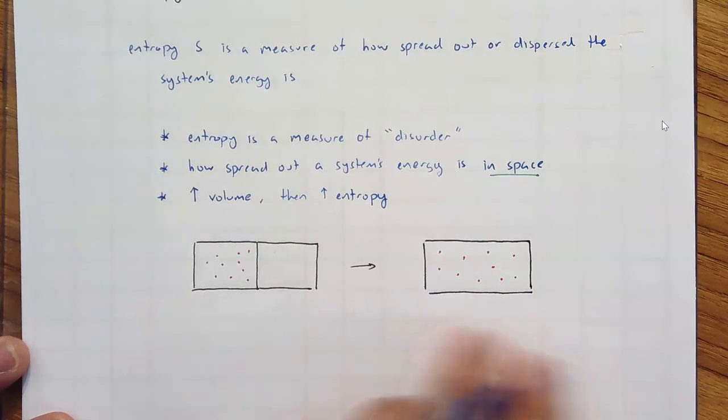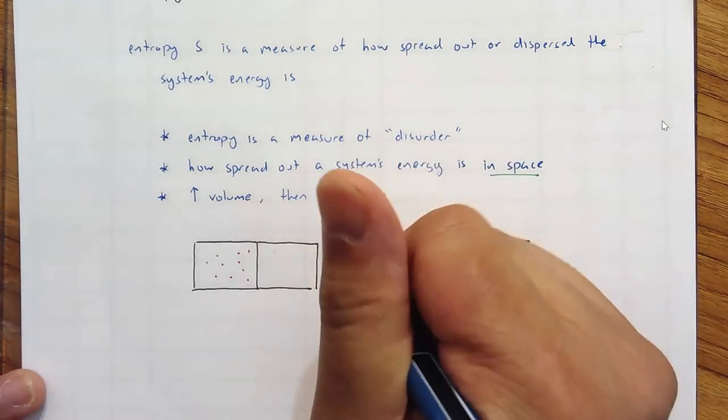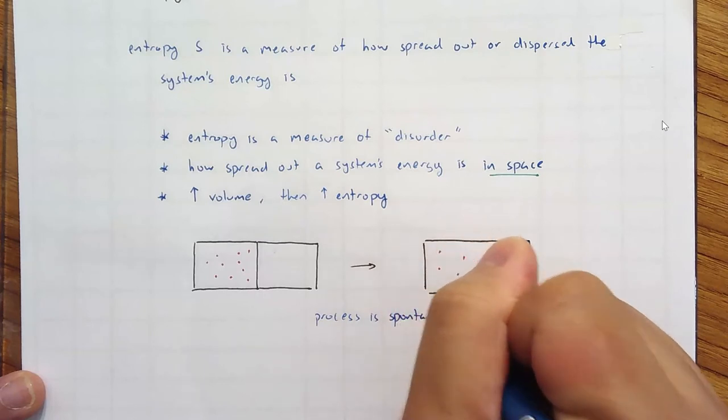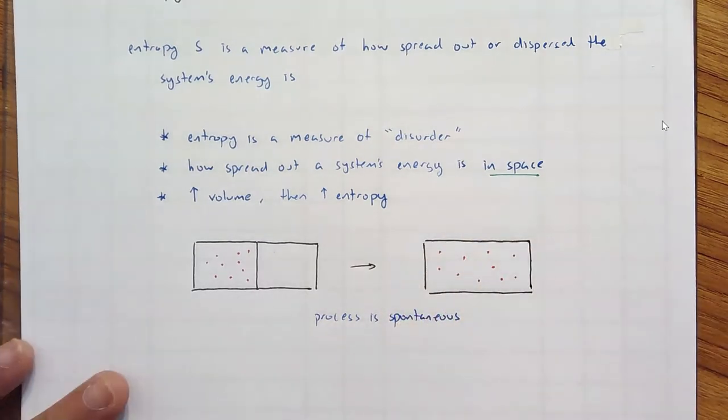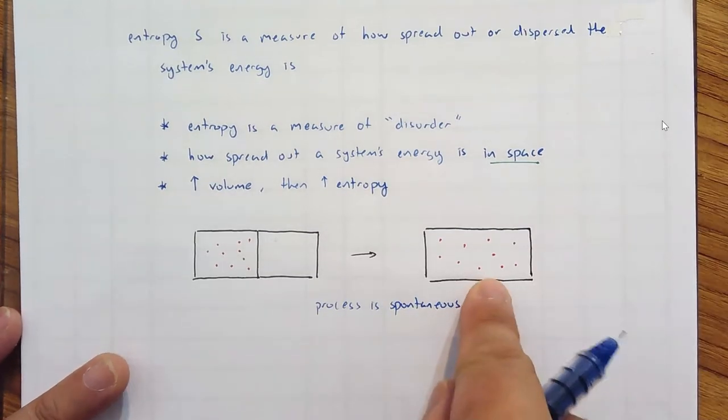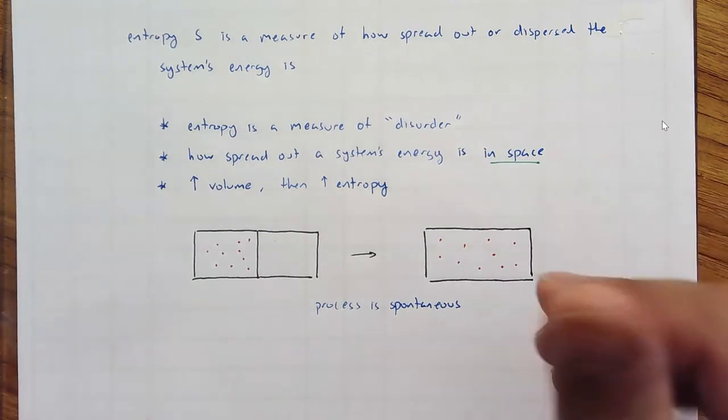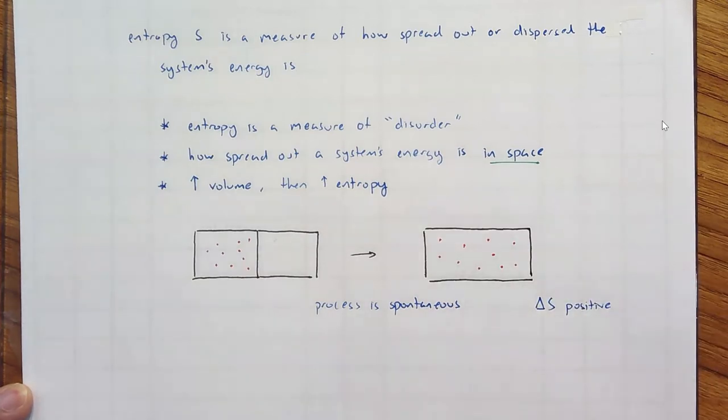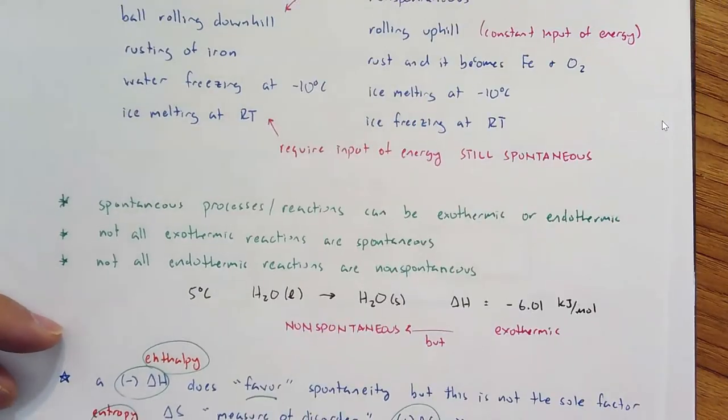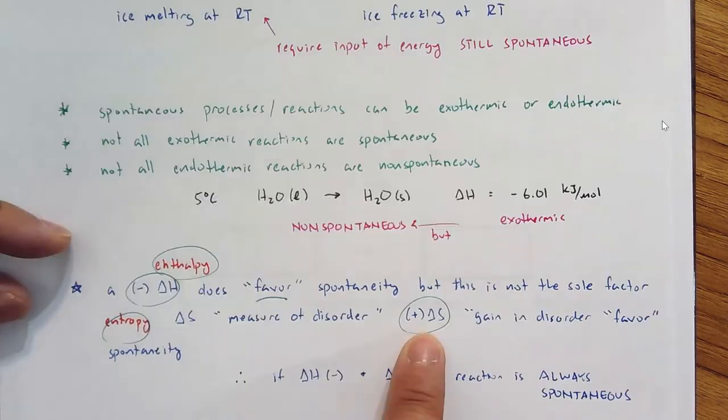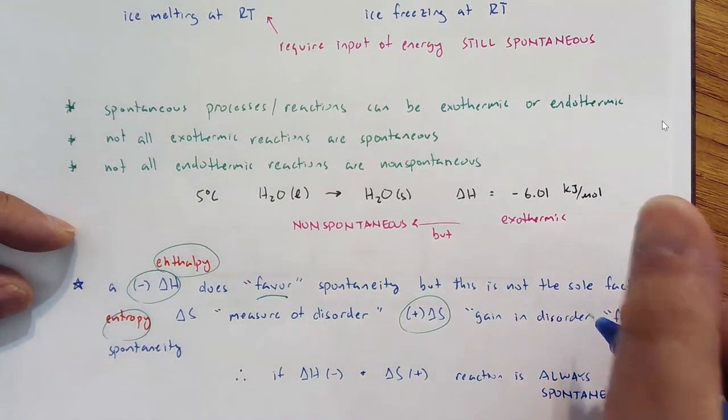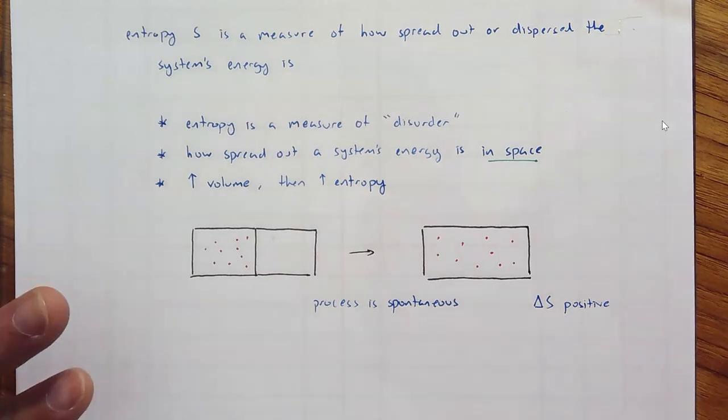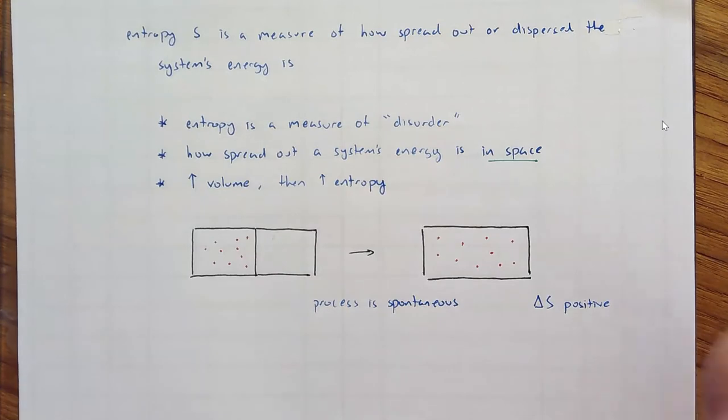This is spontaneous. You remove the barrier, the gas molecules spread out. So this process is spontaneous. Intuitively, we know the gas molecules are more disordered here - they're less confined. So delta S is positive. That aligns with what I said: positive delta S favors spontaneity. What about delta H? If temperature and pressure are constant, there's no change in heat, so delta H is zero.